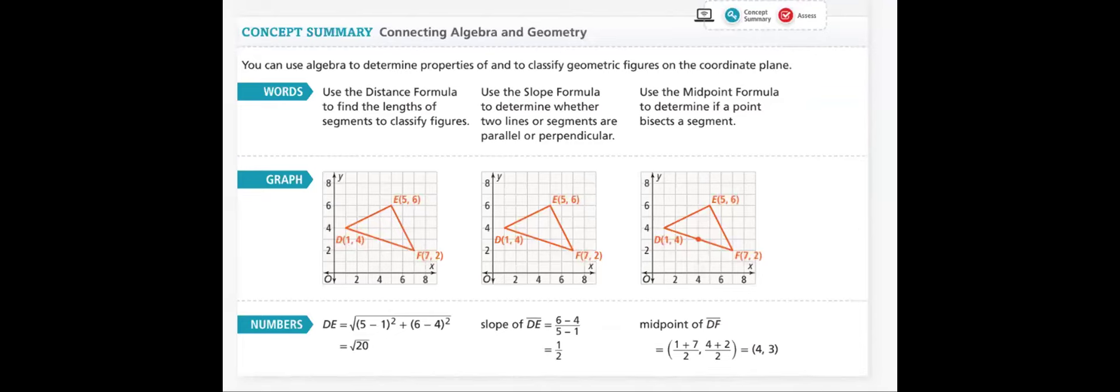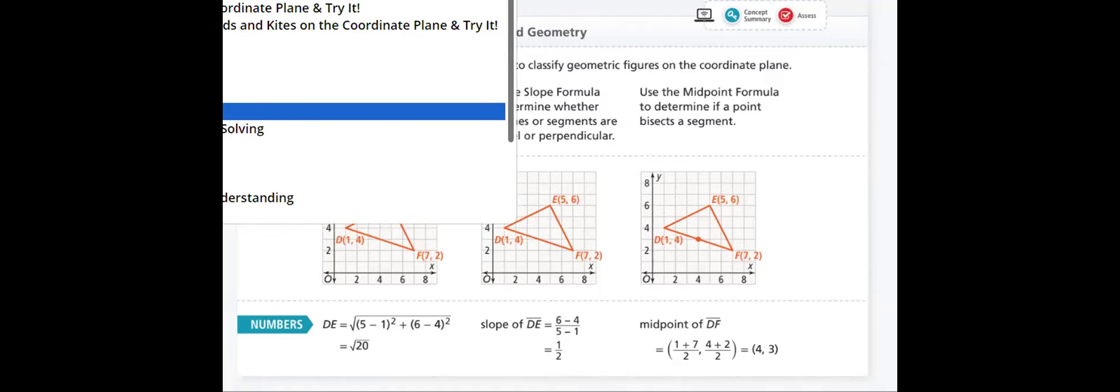To summarize this lesson, in connecting algebra and geometry, we use the distance formula to find the length of segments to classify the figure. We use the slope formula to determine whether two lines are parallel or perpendicular, and we use the midpoint formula to determine if a point bisects a segment. I hope you understand this lesson as you will have understood all the previous lessons. We will also solve so many examples to make sure that you have understood everything thoroughly.